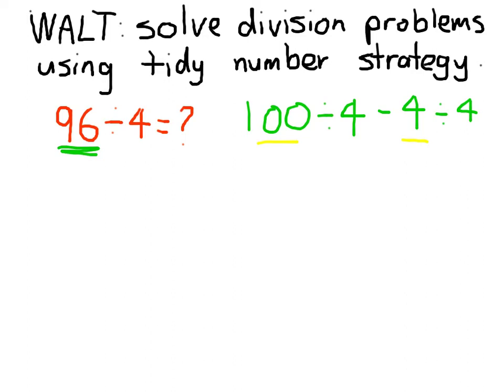Let's follow through and solve the equation now. 100 divided by 4 equals 25, take away 4 divided by 4, which is 1. So the answer is 25 take away 1, which is 24. Therefore, 96 divided by 4 equals 24.